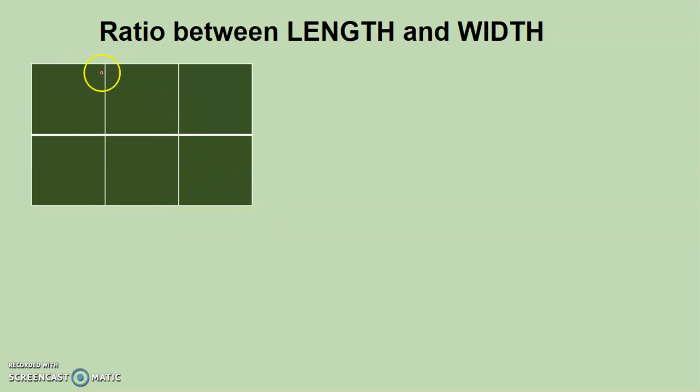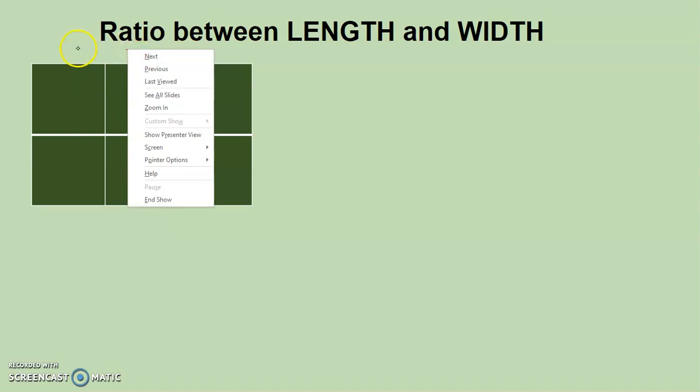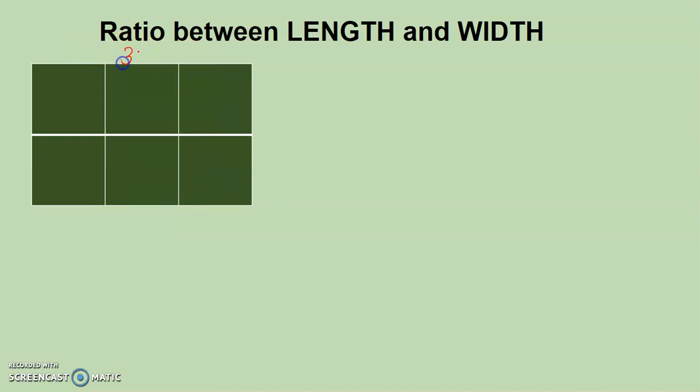Now you can see that here if along the length you have taken three boxes, in other words, you can say that if you have taken the length as three meters, then you must take the width as two meters. It means that our ratio will be length to width.